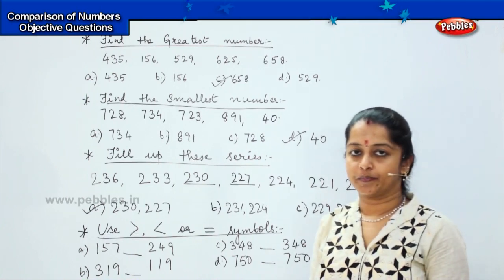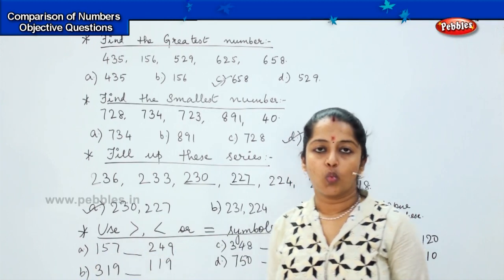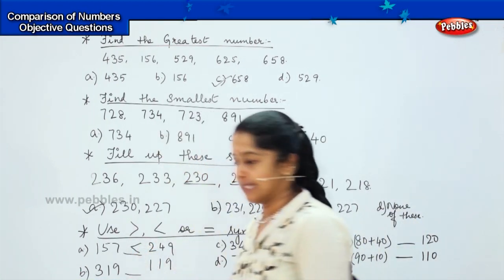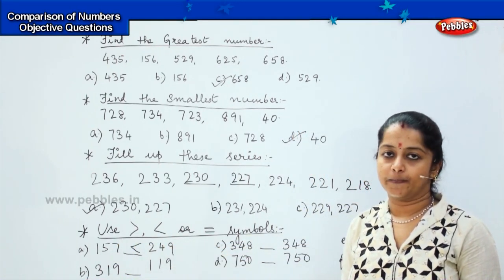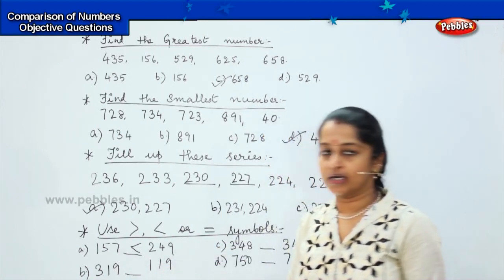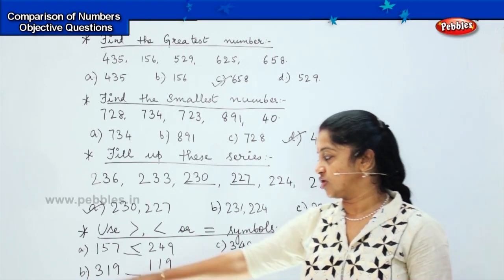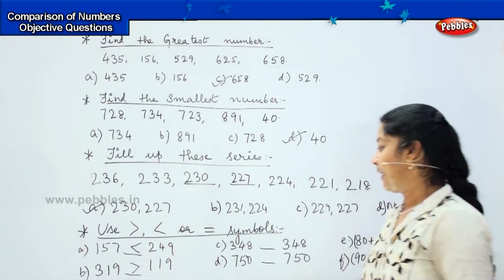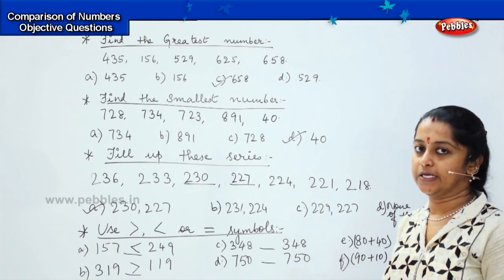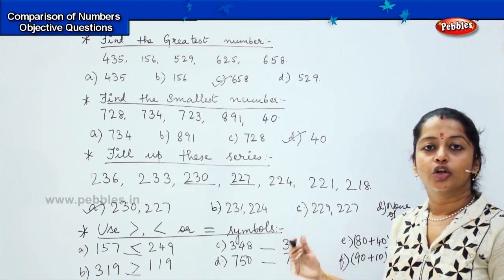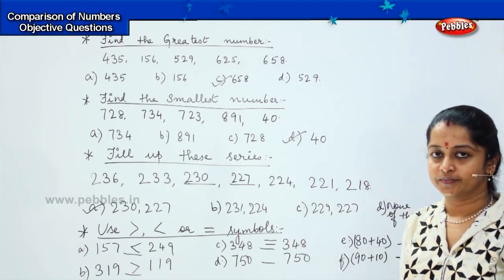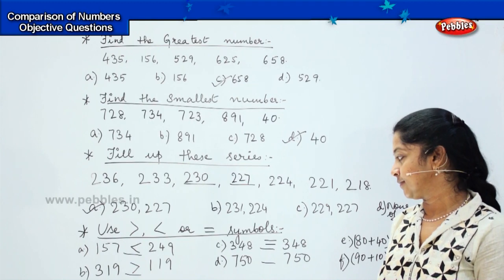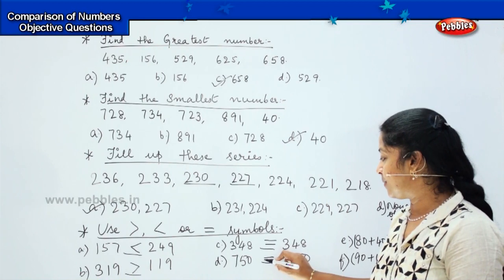First question: 157 and 249. Which is the bigger number? It is 249, because 200 is greater than 100. The crocodile is going to eat 249. So, 157 is lesser than 249. Next: 319 or 119? 319 is greater than 119, so the crocodile eats 319. Next, 348 and 348 — both are the same, so we use the equal to symbol. Similarly, 750 and 750 — both are the same, so it will also be the equal to sign.